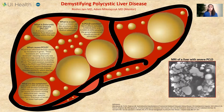Only about 20% of people with polycystic liver disease develop symptoms. Symptoms occur when cysts push on nearby structures and lead to symptoms like abdominal pain, nausea, vomiting, poor appetite, heartburn, shortness of breath, and lower back pain.